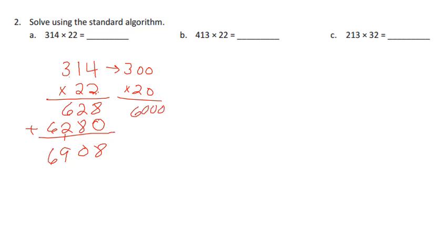Let's go to b. Now we have 413 times 22. 2 times 3 is 6, 2 times 1 is 2, 2 times 4 is 8. Put our placeholder in so we can do 20 times 413, but now we're going to use just our basic math fact of 2: 2 times 3 is 6, 2 times 1 is 2, 2 times 4 is 8.